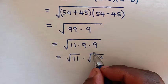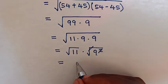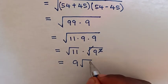In the next step, the square root will cancel with the square. So it equals 9 times square root of 11.